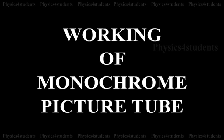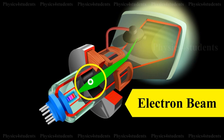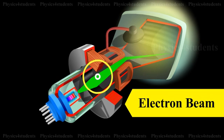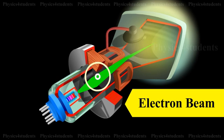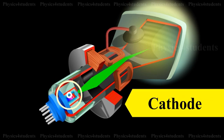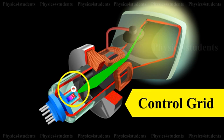Now let us see how the monochrome picture tube works. As the beam is being swept across the face of the tube to trace out the scene, the intensity of the electron beam is varied by the luminance or y-signal. The y-signal is applied to the cathode or in some cases to the control grid.